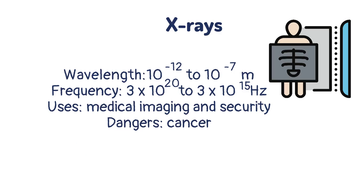Ultraviolet light waves have a wavelength of between 10⁻¹² and 10⁻⁷ and frequencies between 3 x 10²⁰ and 3 x 10¹⁵. They are used in medical imaging. They can cause cancer so hospitals are very careful to make sure that workers and patients are not overexposed.